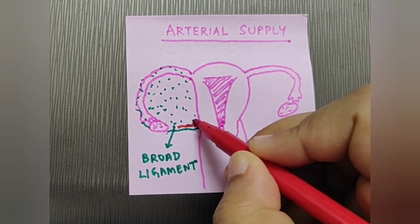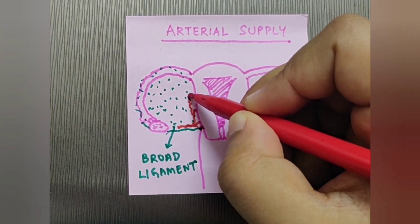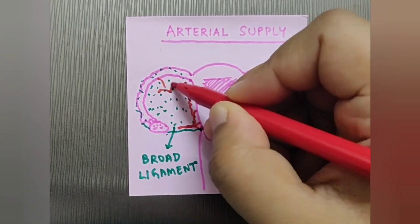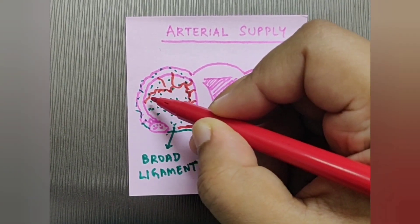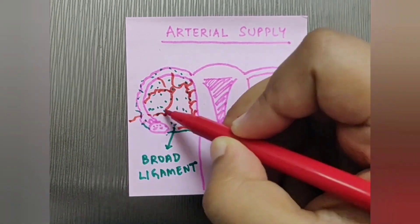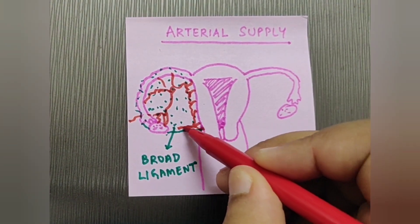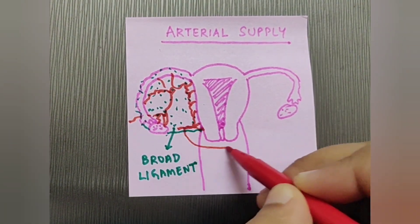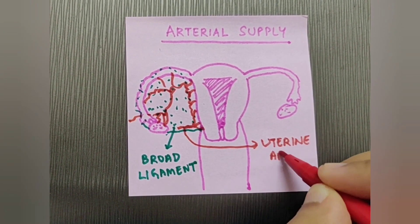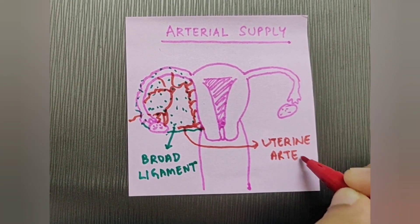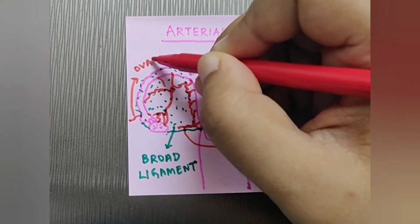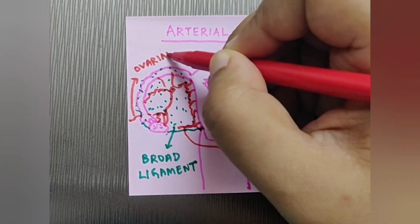The lower border is related to the uterine artery, which is tortuous and gives branches to both the uterus and the fallopian tube and ovaries. Here we have the uterine artery, and then the ovarian artery which is a branch of that.